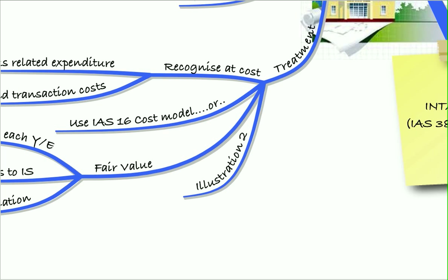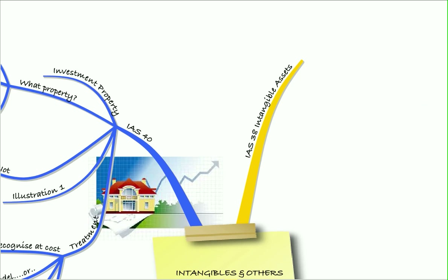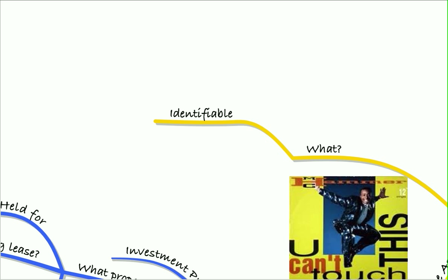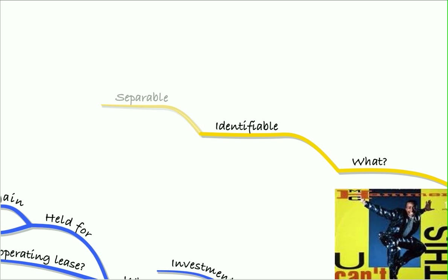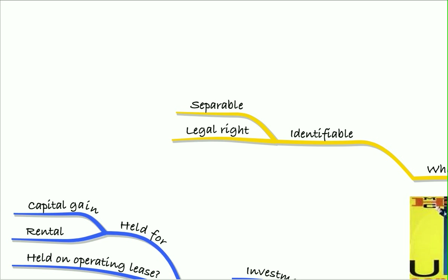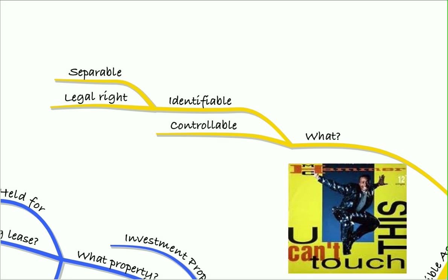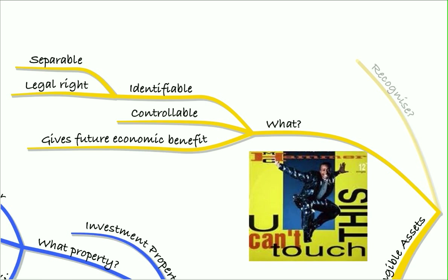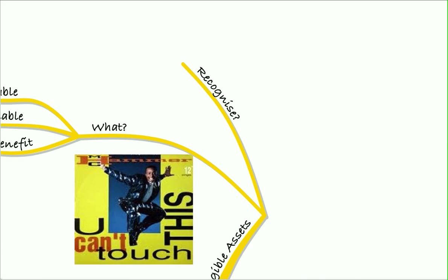We then moved on to IAS 38 — intangible assets. Remember, these are things that are identifiable: they're separable and we have a legal right to them, but we can't touch them. We're thinking about things like brands and patents. We need to be able to control them and they need to give us future economic benefit to be classed as an intangible asset.